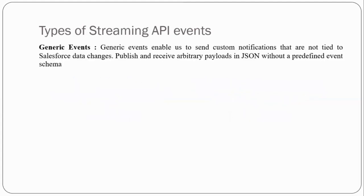The first is generic events. Generic events enable us to send customized notifications that are not tied to any Salesforce data changes. We can send the data from the server in the form of JSON. We primarily use generic events when we want to send an event notification to particular users — we specify the user ID in the JSON, and it will only send the customized notification to that particular user.